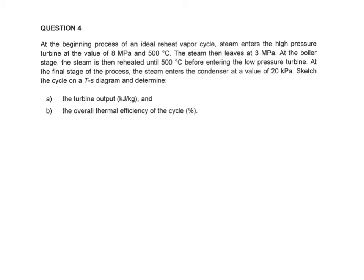The steam then leaves at 3 MPa at the boiler stage. The steam is then reheated until 500 degrees C before entering the low pressure turbine. At the final stage of the process the steam enters the condenser at a value of 20 kPa.